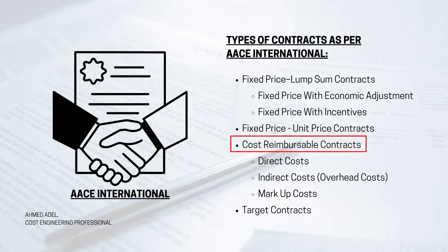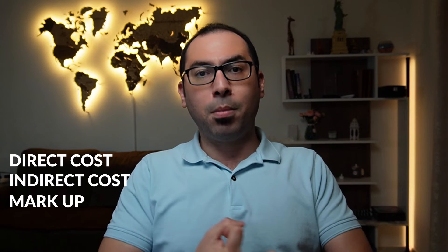The third type is cost reimbursable contracts. Here, the client agrees to pay the contractor for three things: direct cost, indirect cost, and markup. The contractor starts work, calculates direct costs — materials, equipment, manpower, subcontractors — plus indirect costs such as overheads, plus an agreed profit margin, perhaps 10%, 12.5%, or 15%. The client pays all three components.